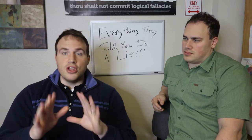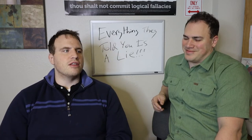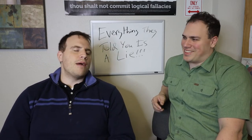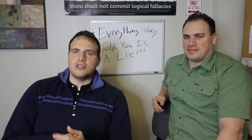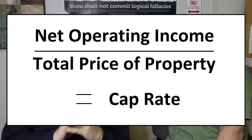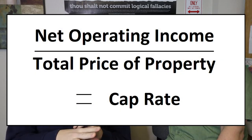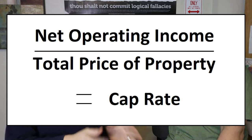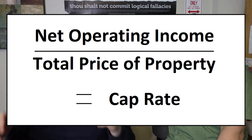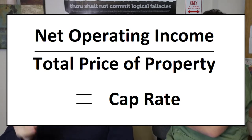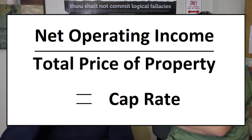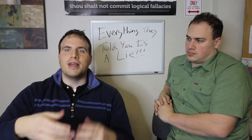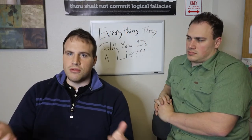What a cap rate is, for the noobs out there that need to learn what a cap rate is, it's very simple. You take your net operating income — basically how much money you made after all of your expenses — and then you divide by the total price, the purchase price plus rehab, whatever you're all into the property for, and that is your cap rate. It will be .06, .08 — you make that a percentage if you want.